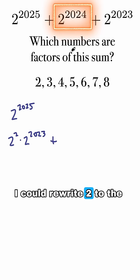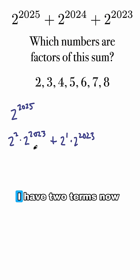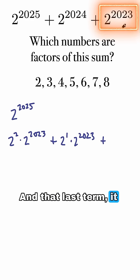I could rewrite 2 to the 2024th power as 2 to the first times 2 to the 2023rd power. I have two terms now, both with the 2 to the 2023rd power in them. And that last term, it already has it, so I'm going to keep it just as it is. That's 2 to the 2023rd power.